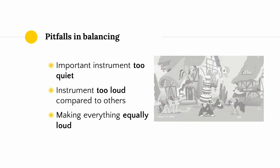What you don't want is a situation where you have an important instrument that is too quiet, or if you've made an instrument way too loud to the point where it prevents anything else from being heard. Another common pitfall in balancing is trying to make everything the same loudness. Just because it's called balance doesn't mean that everything has to be the same. Remember, your listener can only pay attention to so much at once. If you have a complex musical arrangement and you make everything equally loud, the listener won't know what to focus on — it can be very confusing.